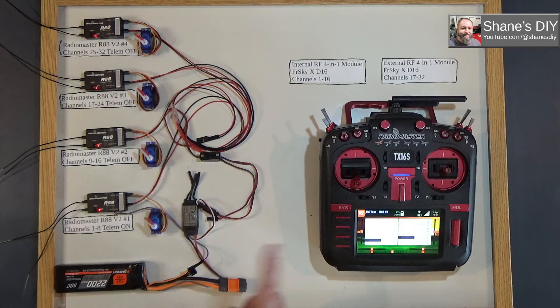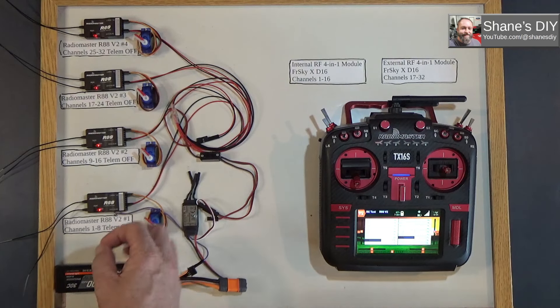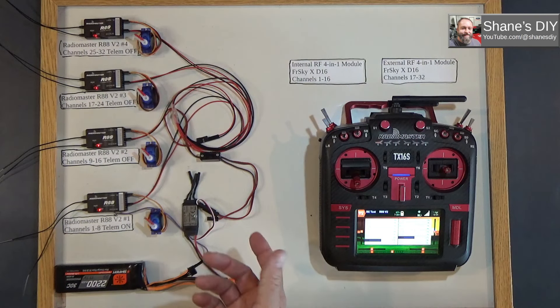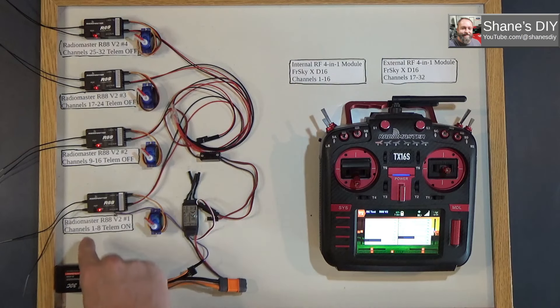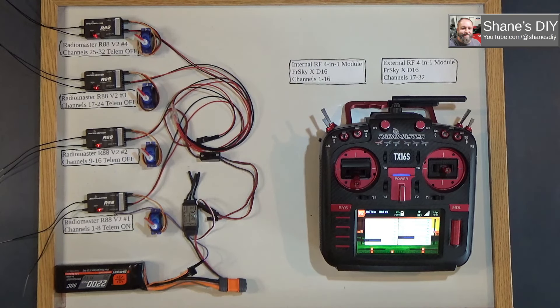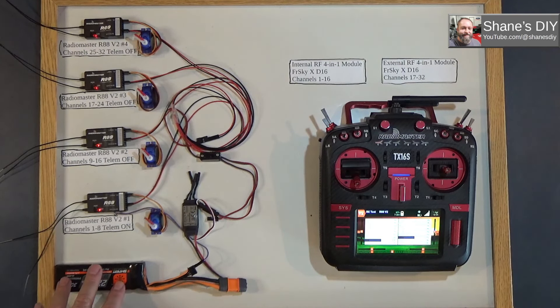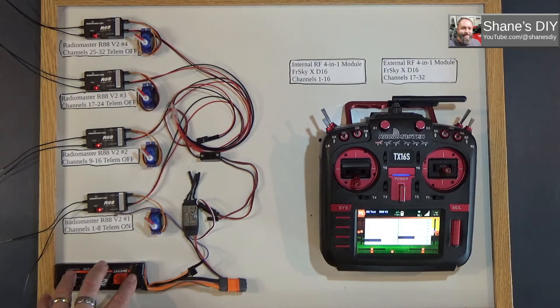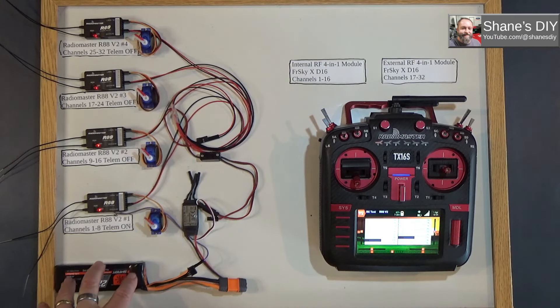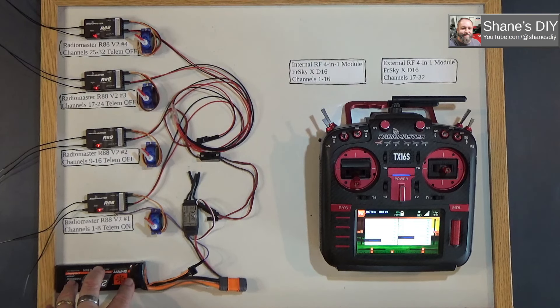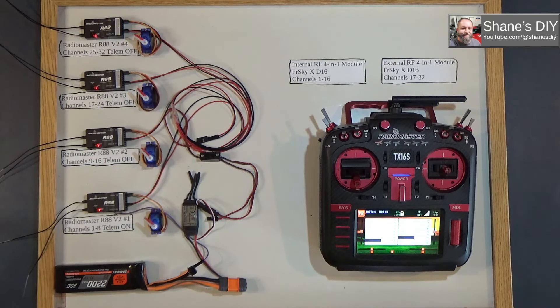I'm not aware of any other protocols besides FRSky XD16 that lets you do that. If you know of any other receivers that let you select 1 to 8, 9 to 16, I'm not sure if there's any ELRS receivers that have those options or not. If you do, put them in the comments below. Share it with the others so we can have a better idea. I searched the multi-protocol module documentation. I didn't come across any other that lets you do it that way.